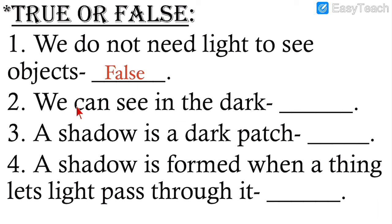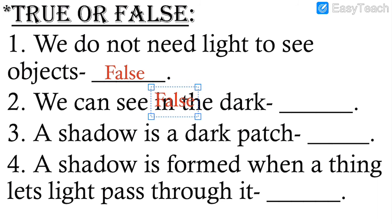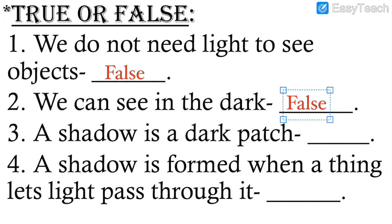Number two: We can see in the dark — this is also a false statement. You cannot see in the dark; you need light. During daytime we have sunlight; at night we have tube lights and street lights. So we can see in the light, not in the dark.